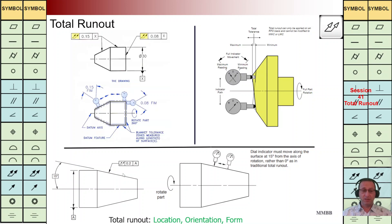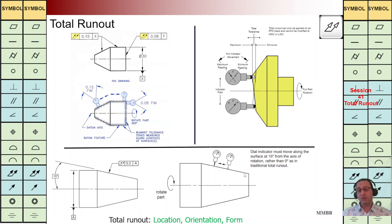At bottom, we are going to implement total run out: TZ is 0.2, back to A — A is the axis of this cylinder. Whenever we rotate the component, the dial gauge should be perpendicular to that conical surface, meaning we have two coaxial conical surfaces. This surface should be between those two coaxial conical surfaces, using this basic dimension. We are going to control location, orientation, and form of this conical surface.